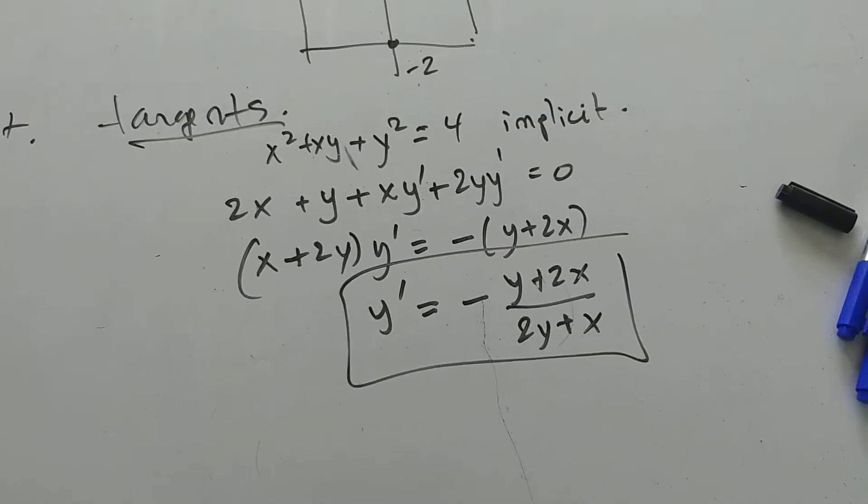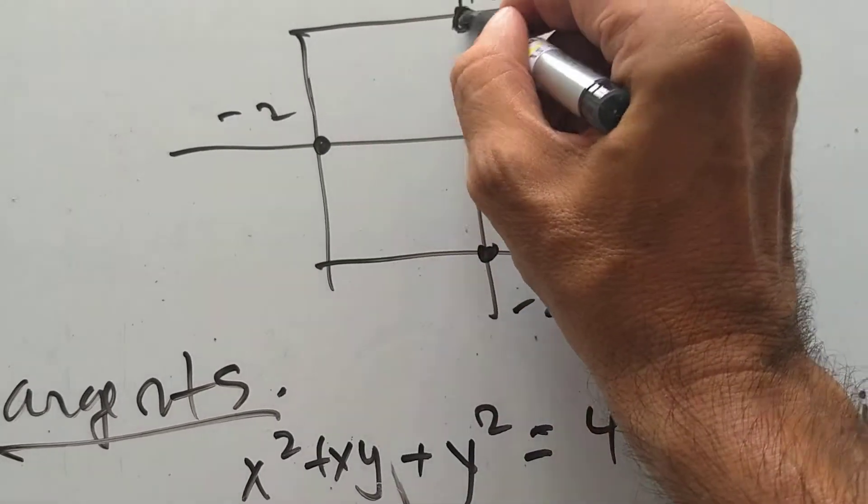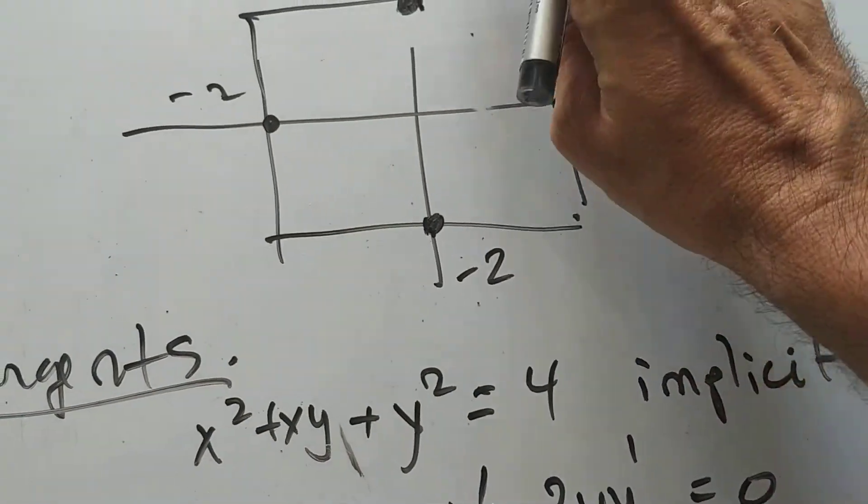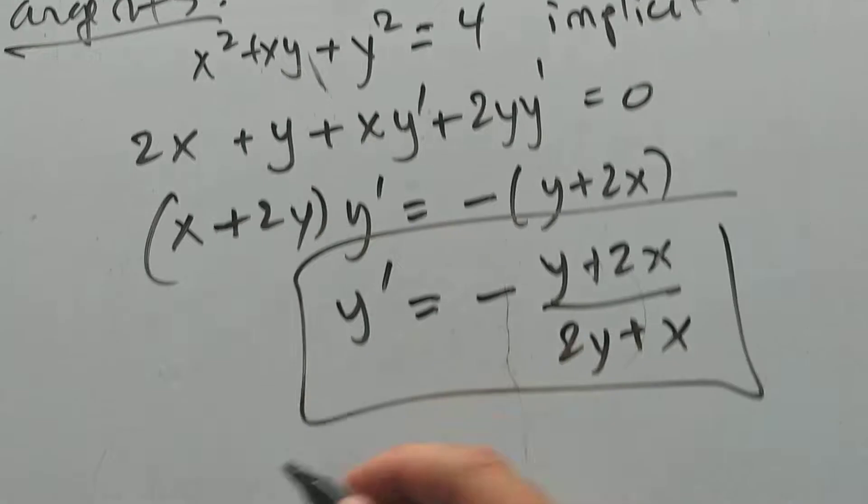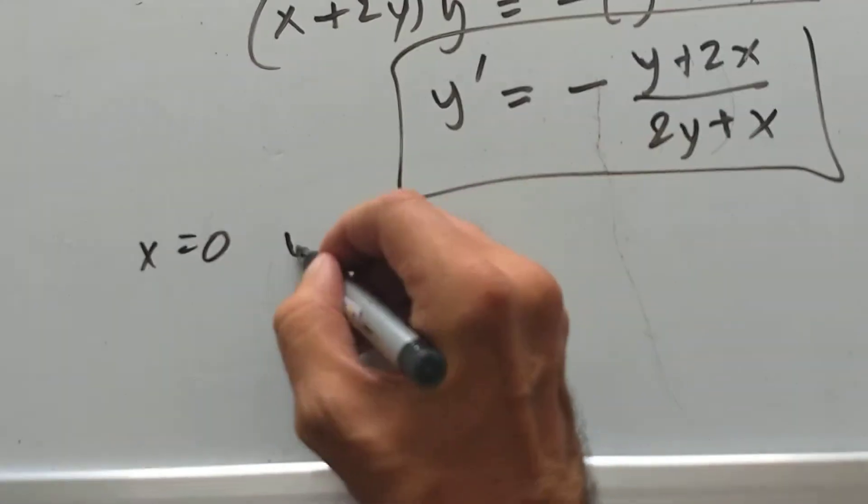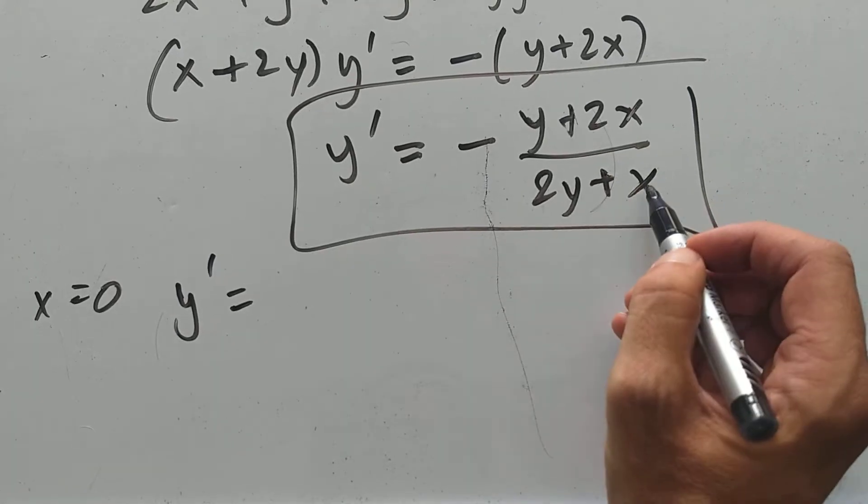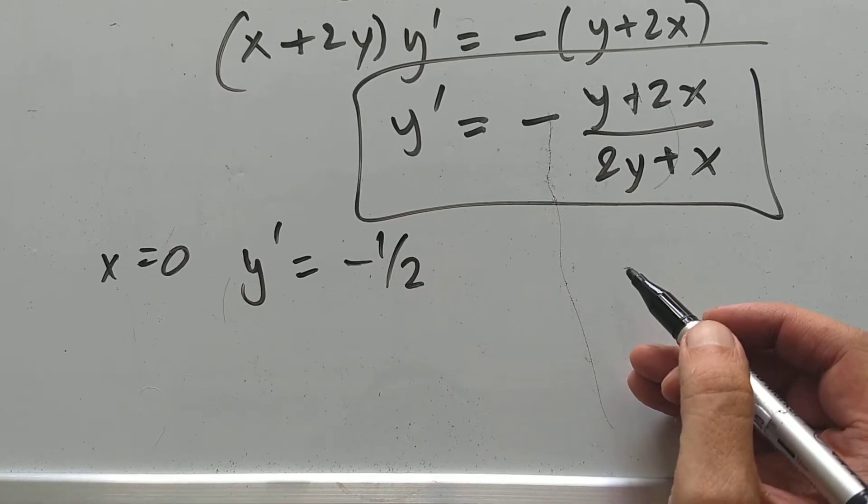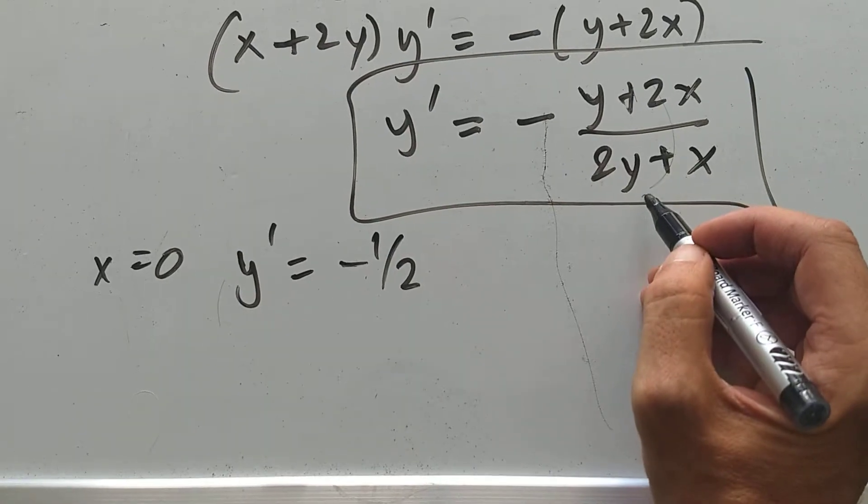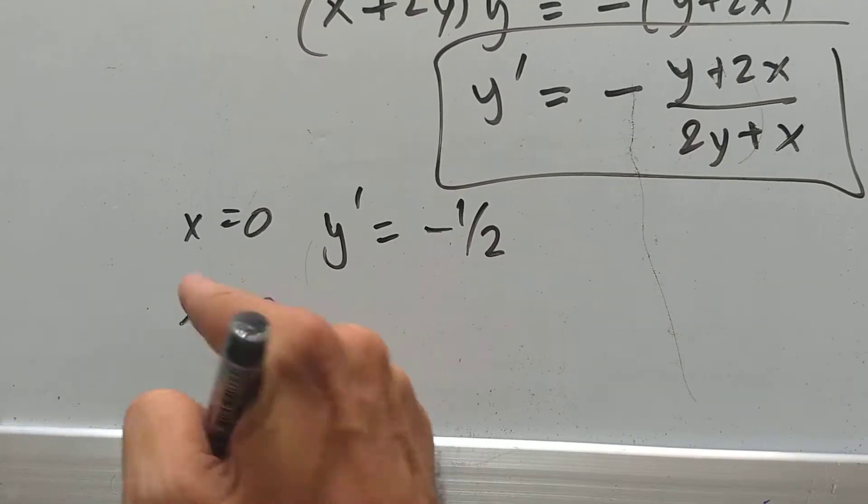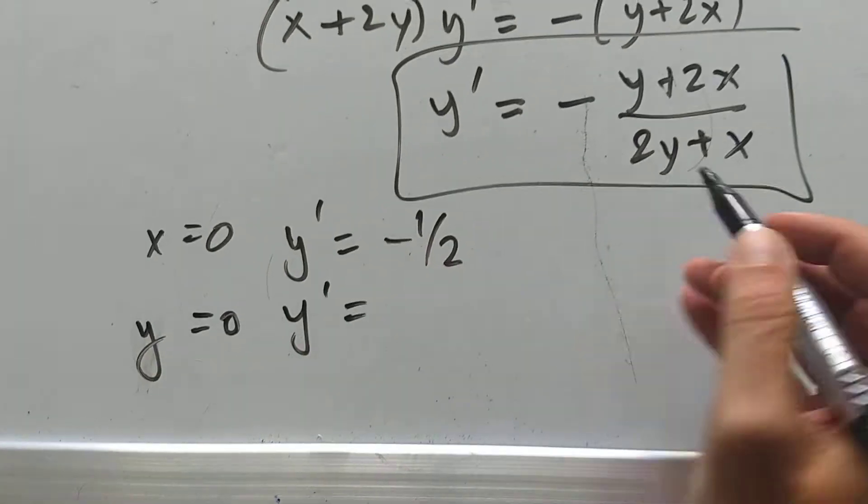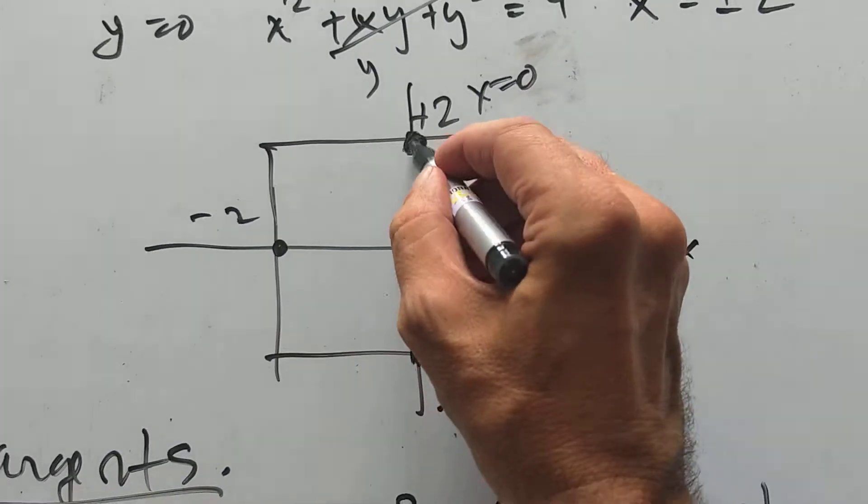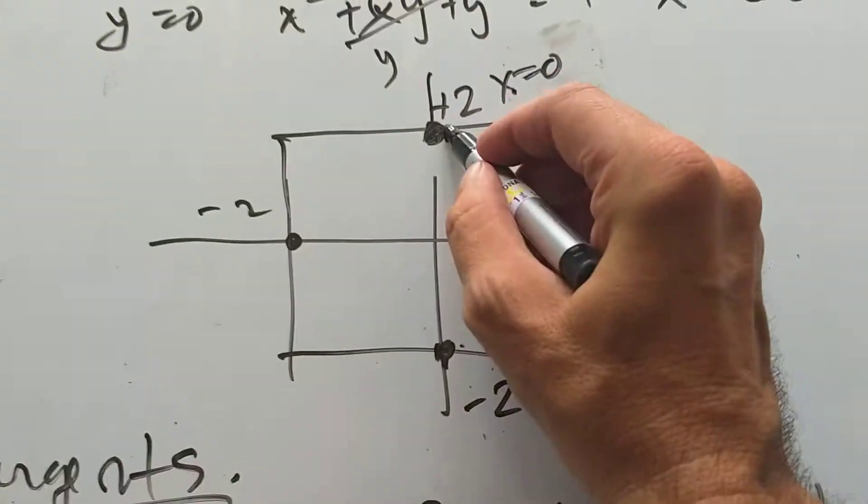This is very interesting. Very interesting indeed. So let's look at these points here. X is 0 at these two points. So let's put in X is 0. If I put in X is 0, Y prime becomes what? Put in X is 0 here. And I get minus 1 half. Okay. Minus 1 half. And Y cancels out. Now, let's put Y is 0. If I put Y is 0, I get minus 2. The X is canceled out.